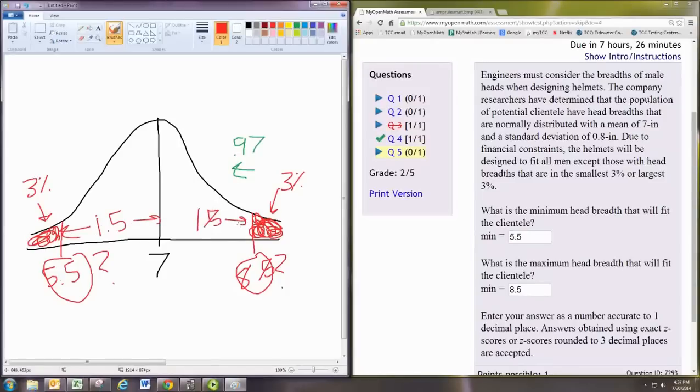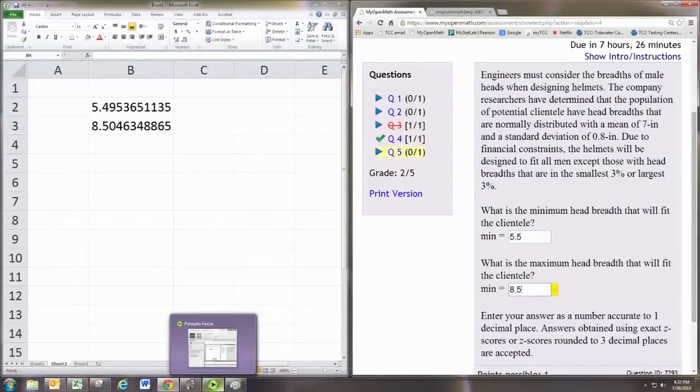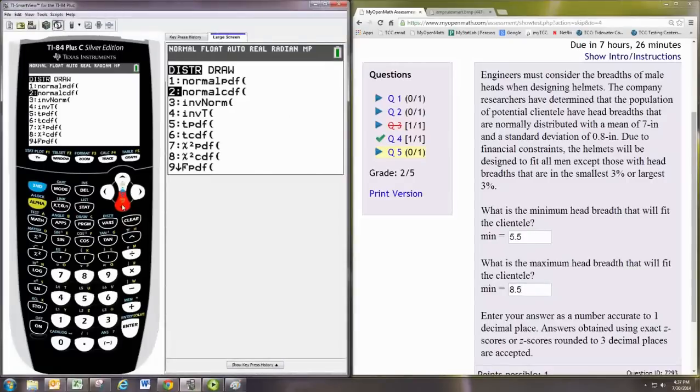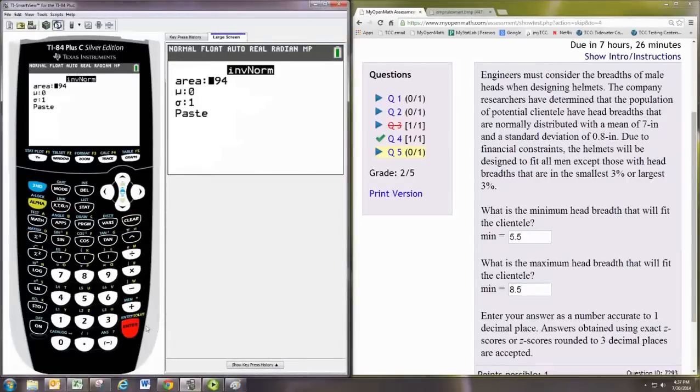So, you have to have that symmetry. We can do this on the graphing calculator as well. You hit 2nd, VARS, to go to the distribution menu, and do inverse norm. Tell it first, the area to the left, so 3%.